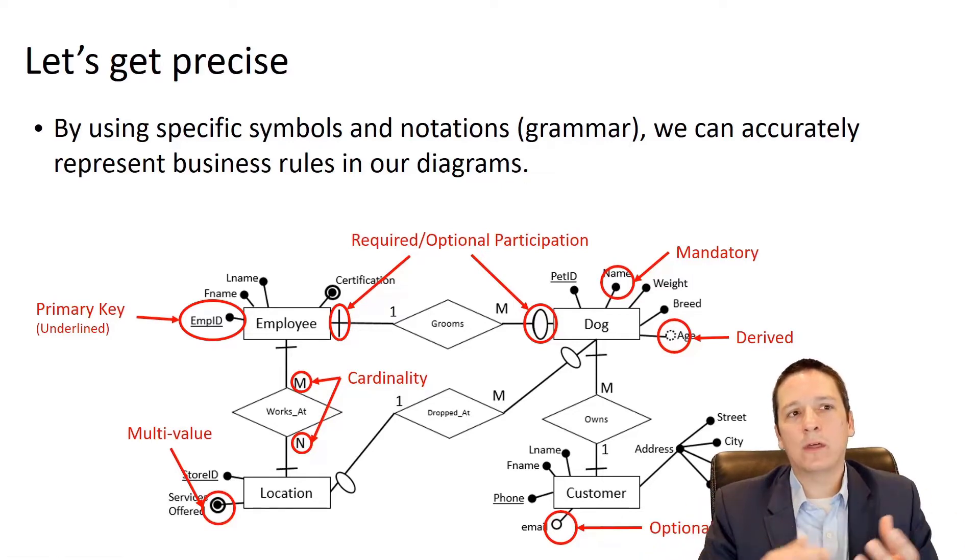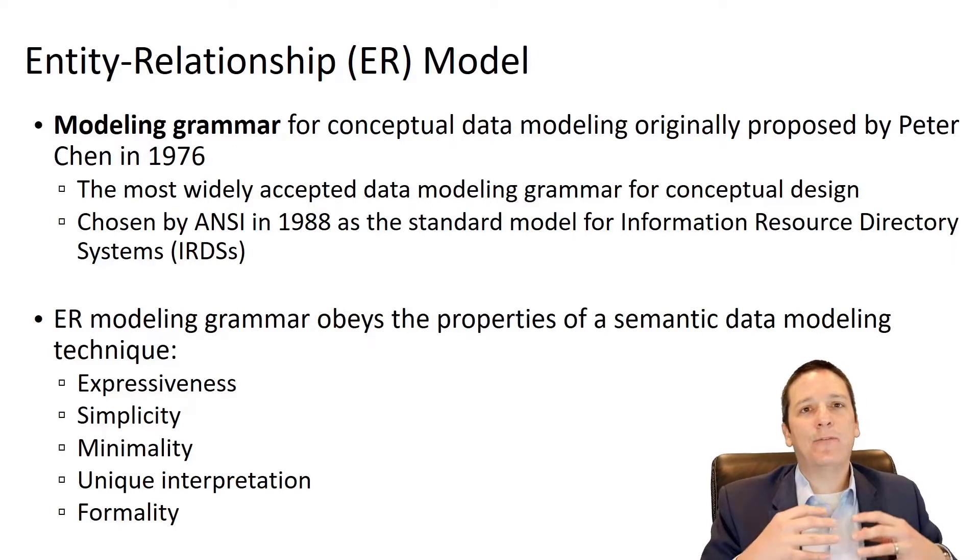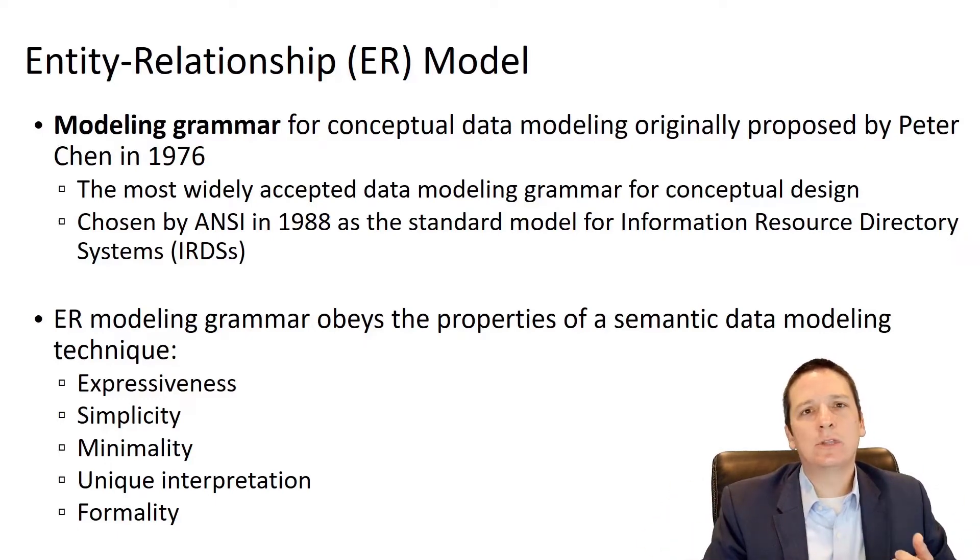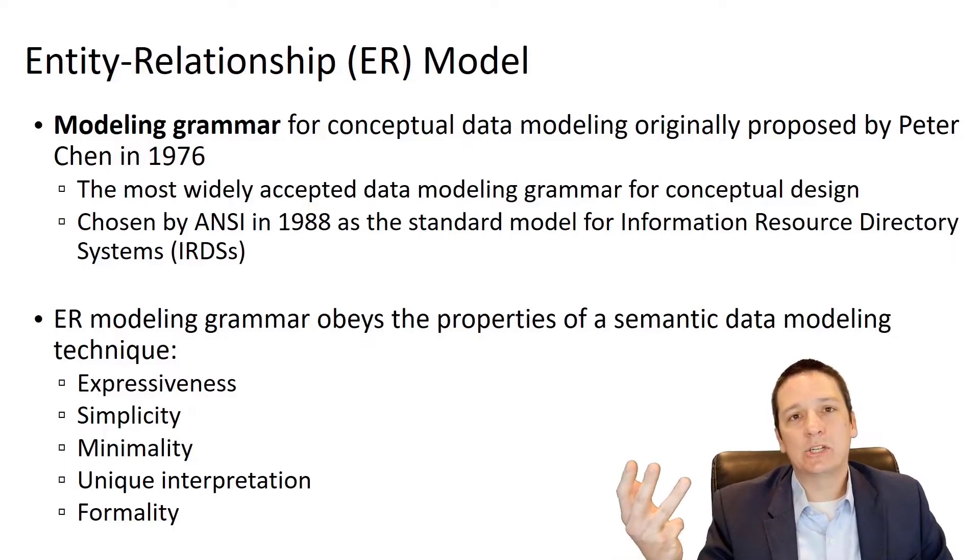So real quick overview of what we're going to be talking about with our ER grammar. And specifically, the ER grammar that we're going to be talking about is the Chen notation. And this is a very widely used modeling grammar. Chen notation and the crowfoot notation are the two kind of big ones. Chen notation gets used a lot in an academic setting and in classes because it is a little bit more verbose and specific about every little thing we're doing. But whichever notation we're using, they all share these five properties that make them useful. They're expressive, they're simple, they're minimal, they have a unique interpretation, and they are formal.